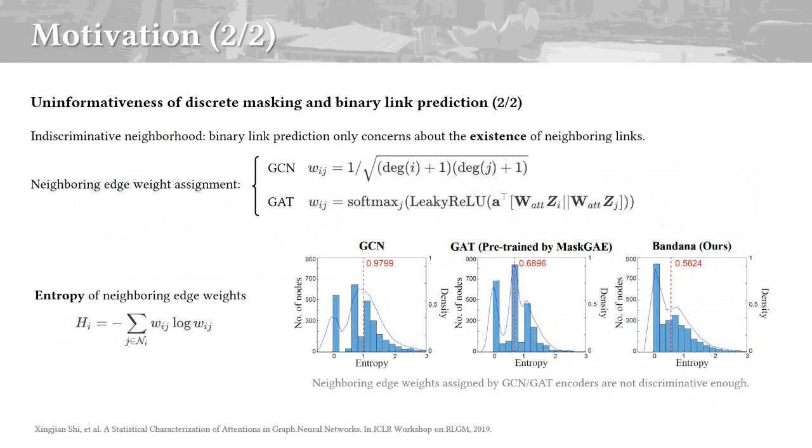From the local perspective, discrete masking and binary link prediction only concern about the existence of links to some neighbors. From the entropy histograms below, both GCN and GAT are not effective enough to distinguish the messages among different neighbors.